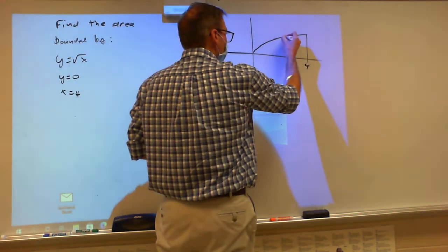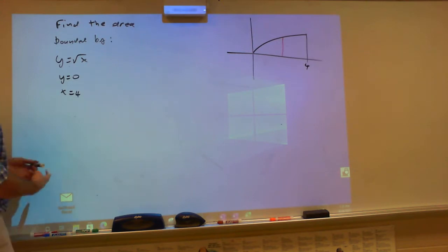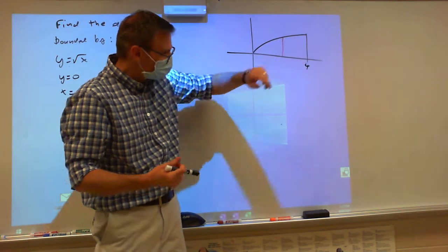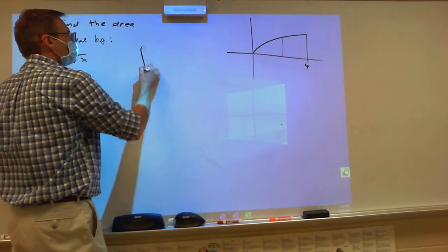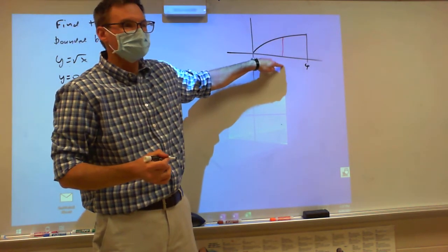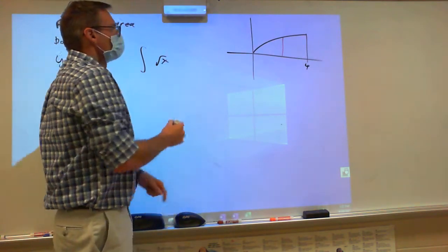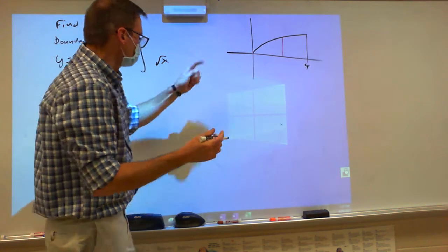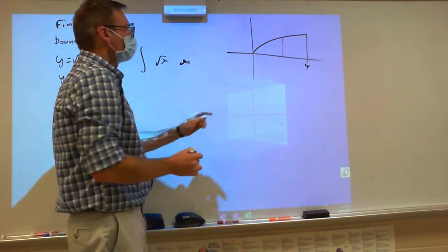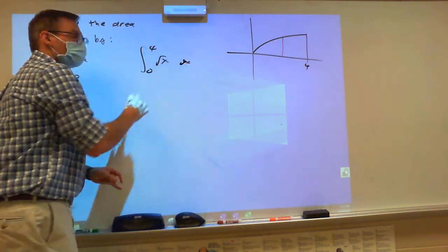So we're going to draw our little rectangle. For this particular question, if I said find this area — the region bounded by those graphs — we're going to set our integral up. You look at the rectangle and you think top function minus bottom function. What's your top function? Square root of x. What's your bottom function? Zero. The width of my rectangle is dx, and where am I stacking my rectangles? From zero to four.